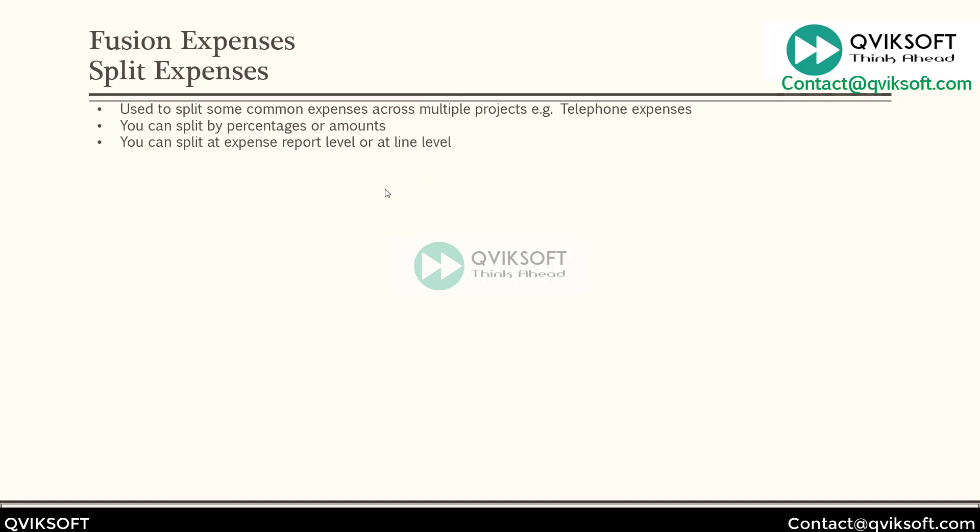These are just some of the features which organizations need to have the split expense functionality. Now let me show you how to enable it and what kinds of enabling features are available. When you talk about split expenses, the first thing you need to enable is 'Enable Split Allocations' to Yes in system options. We have covered that in our system options chapter, so you can go to that section and enable split allocations. Even after doing that, if you go to the expense report, you will still not see it because there are additional setups which you need to enable.